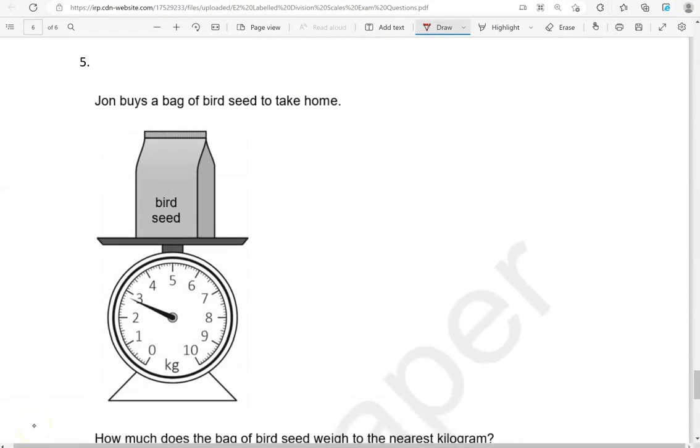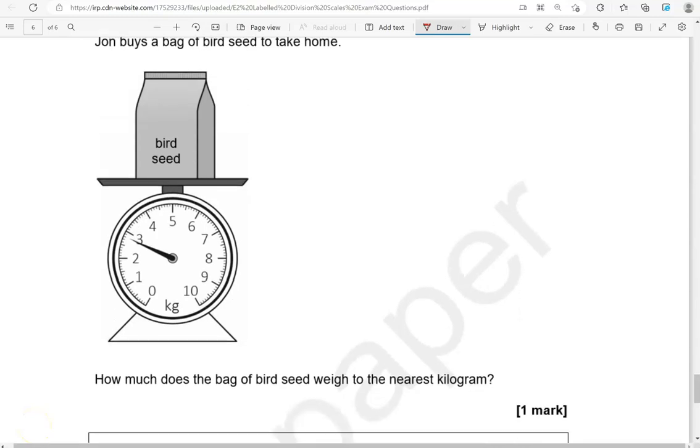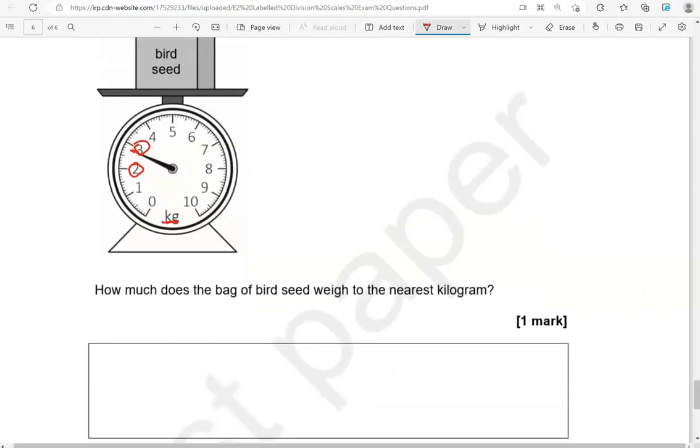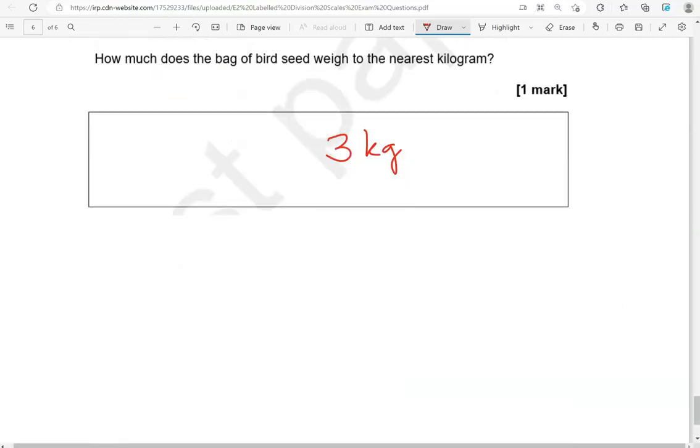John buys a bag of birdseed to take home. How much does a bag of birdseed weigh to the nearest kilogram? So that is in between 2 and 3 kilograms, and it's closer to 3. So we're going to say 3 kilograms. And that's the end of the questions.